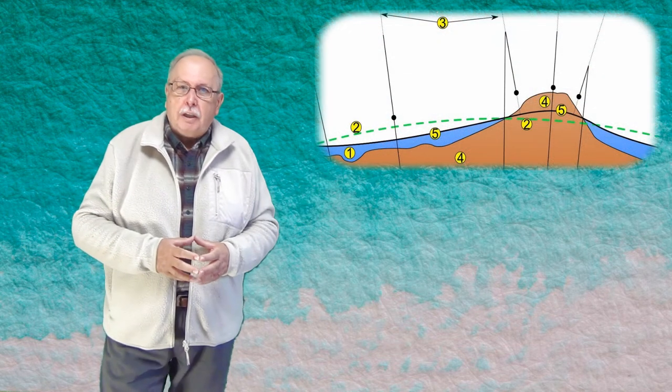Încă ceva interesant legat de forma oceanului planetar, ceva ce are mare legătură cu ce v-am spus azi. Din cauza câmpului gravitațional al continentelor, care atrag apa spre ele, forma oceanului planetar se abate de la cea de sferă, sau mai bine zis de elipsoid de rotație, pe care ar avea-o dacă n-ar exista continente.